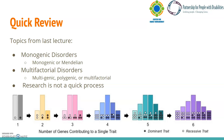Lecture 4 covered the difference between monogenic and multifactorial disorders. Remember that monogenic disorders, also sometimes called Mendelian disorders, mean that there is one gene almost always responsible for the disorder. We talked about cystic fibrosis and how almost all cases are traced back to one gene, CFTR.